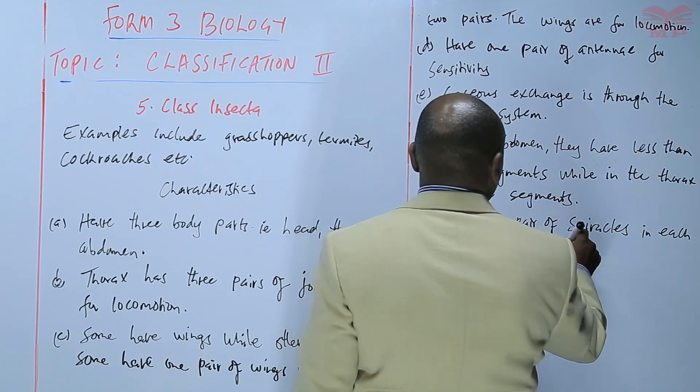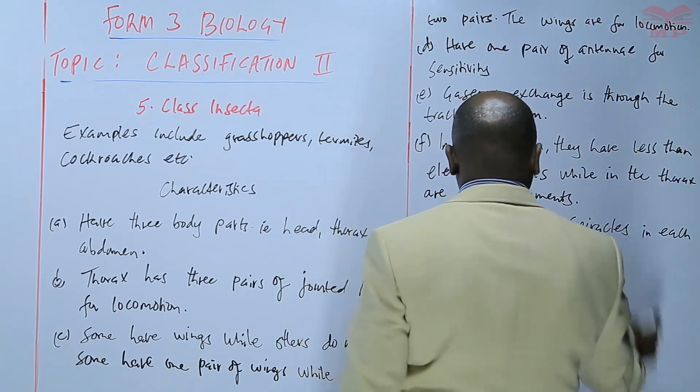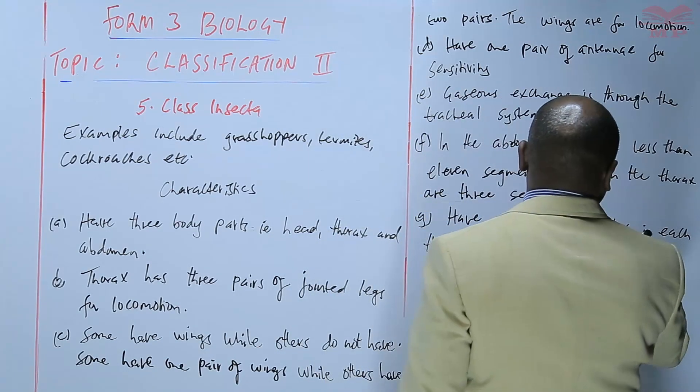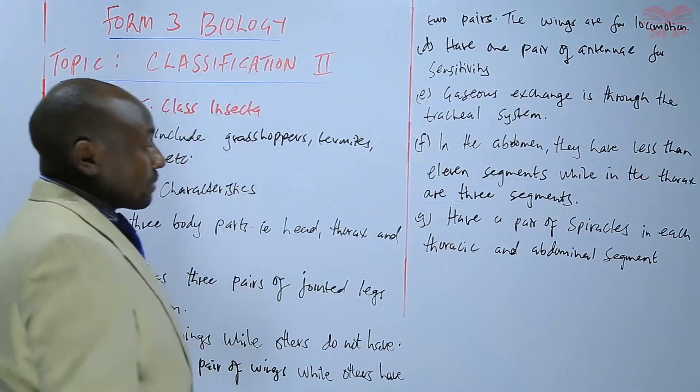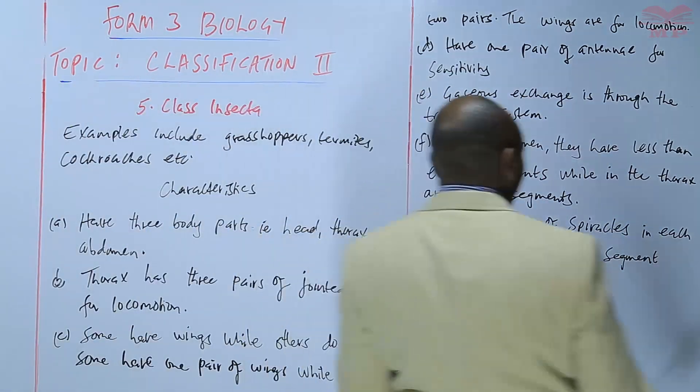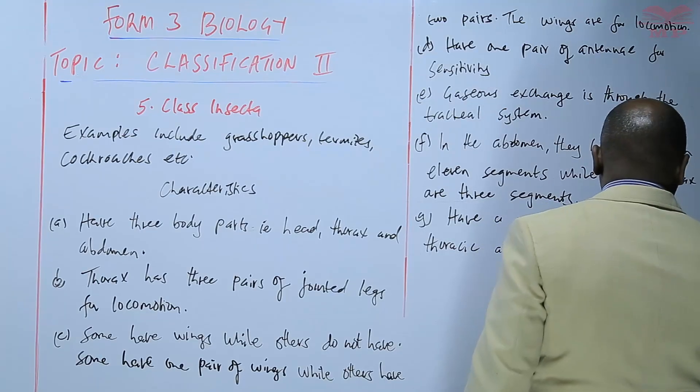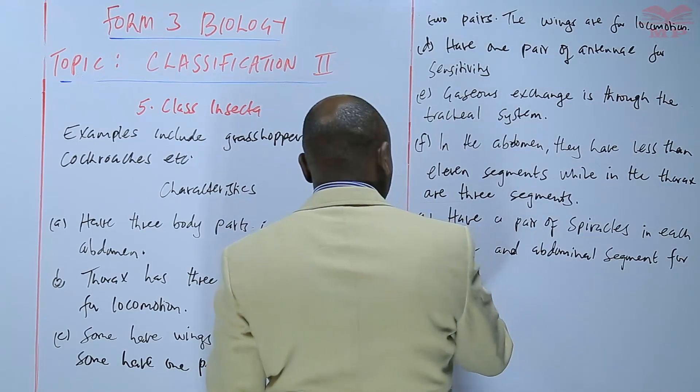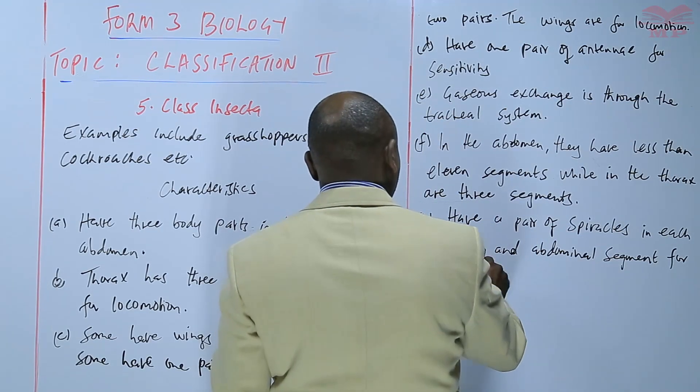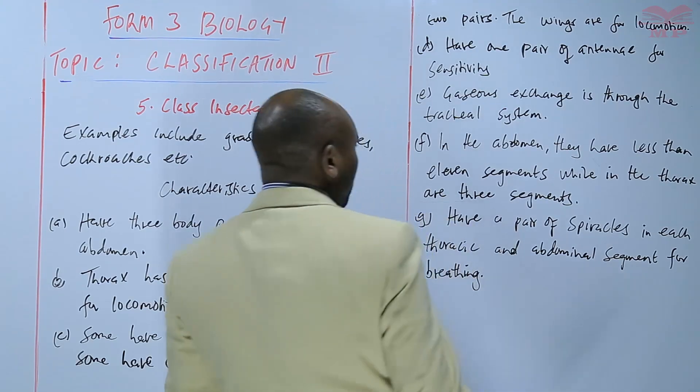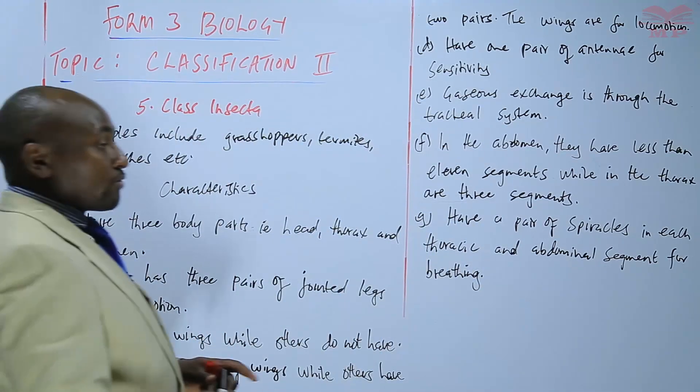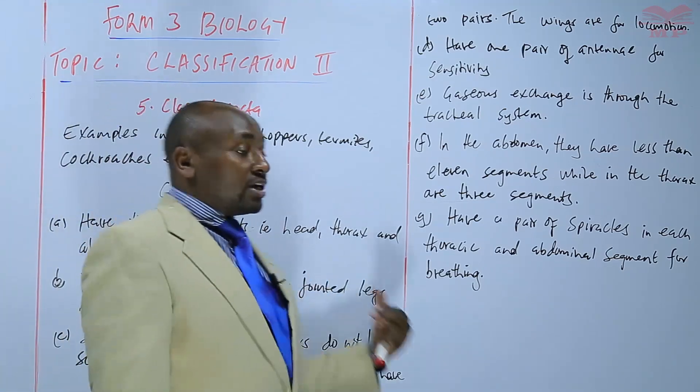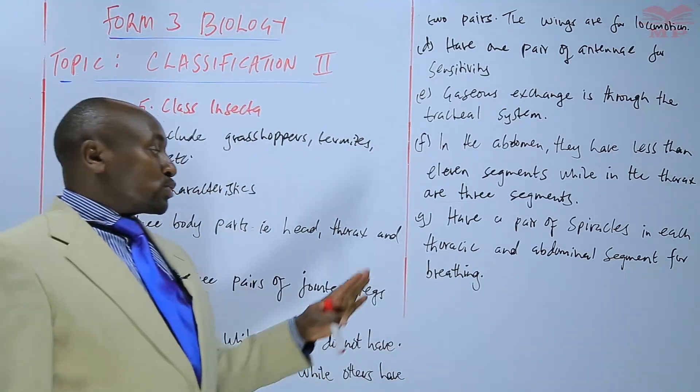They have a pair of spiracles in each thoracic segment, that is in the thorax and abdominal segments. So in each segment there is a pair of spiracles for breathing.